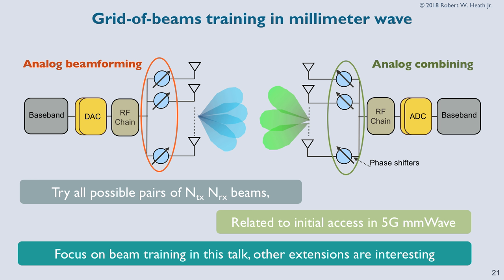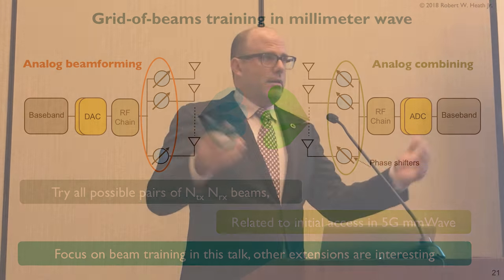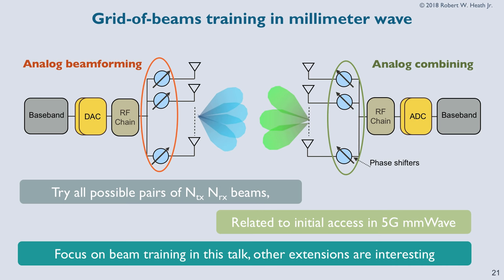One of the challenges is that because the bandwidth is so high at millimeter-wave, you cannot overhear a transmission without beamforming gain. So the transmitter tries to point in different directions, and if you have multiple receive antennas, you can try to listen in different directions. The hope is that at some point, the transmitter and receiver find a common communication path that works well. This approach is called grid of beams. If you have NTX transmit beams and NRX receive beams, you have to try all possible combinations — with a lot of antennas, there's a huge amount of overhead.